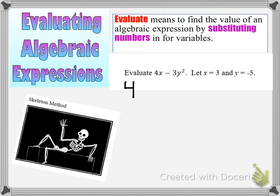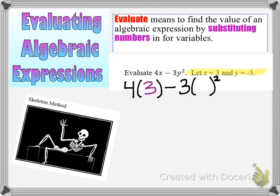I'm going to create my skeleton for this expression. I'm going to keep the number 4, but in the place of the x, I'm going to put an open set of parentheses — that means I've taken the variable out and I'm just leaving behind the skeleton. Then I have my minus sign and 3, and then in place of that y, I'm going to have another set of empty parentheses, squared, because the variable y was being squared. This is my skeleton. Now I'm going to put back in those values: 3 for x and negative 5 for y.